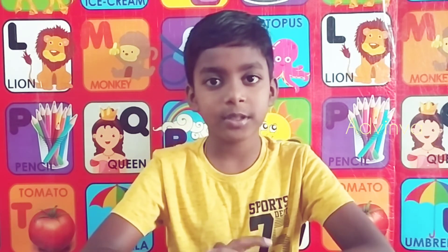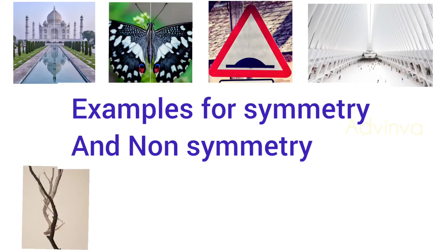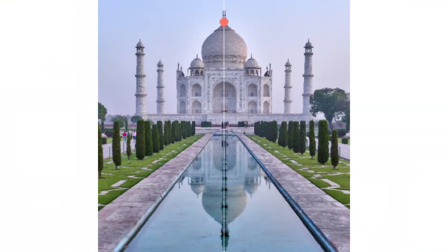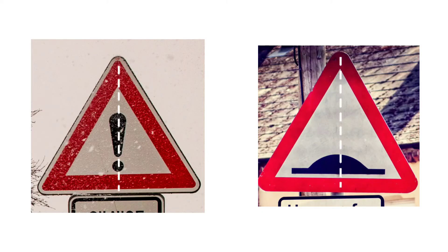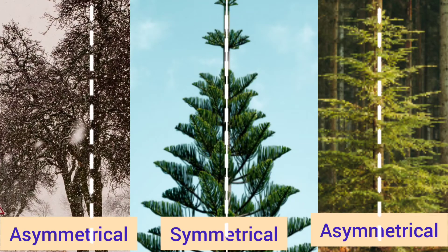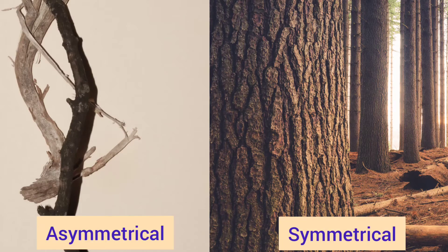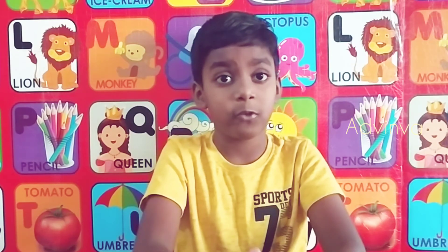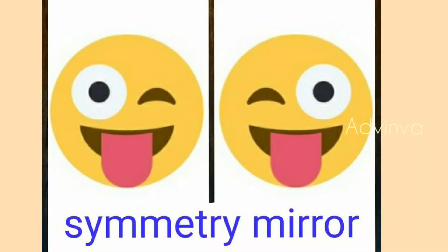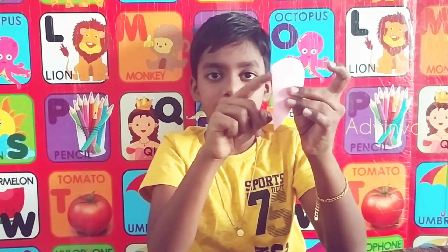Now I'm going to tell you some examples of symmetrical and non-symmetrical things in our surroundings. For symmetrical, an example is the Taj Mahal. For non-symmetrical — another word for that is asymmetrical — a tree: some trees look the same on both sides, but some don't. Sticks are also asymmetrical — if you cut a stick, it doesn't look the same on both sides.